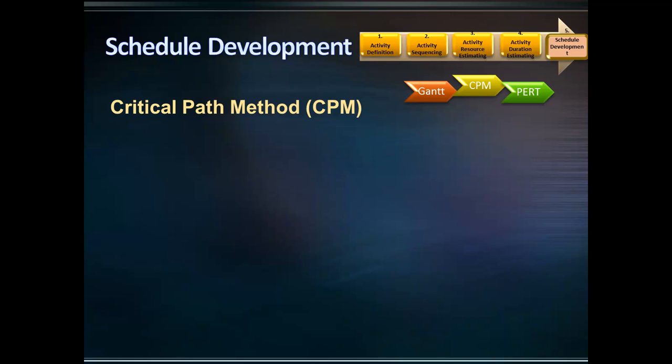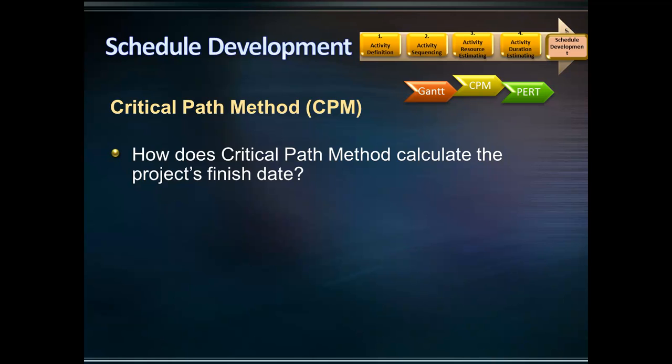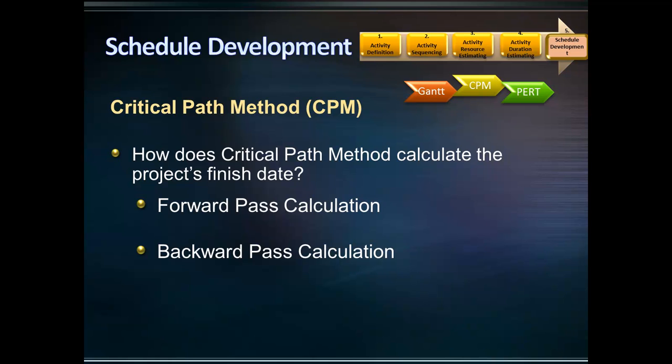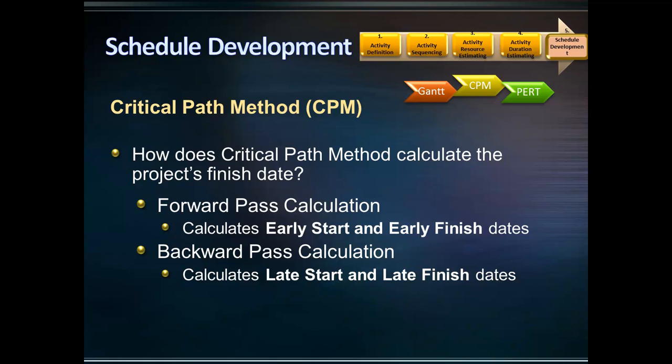To calculate the project's overall duration, the Critical Path Method uses two calculations: forward pass calculation and backward pass calculation. In the forward pass, the early start and early finish dates are calculated. In the backward pass, the late start and late finish dates are calculated. But what is the early start, early finish, late start, and late finish?